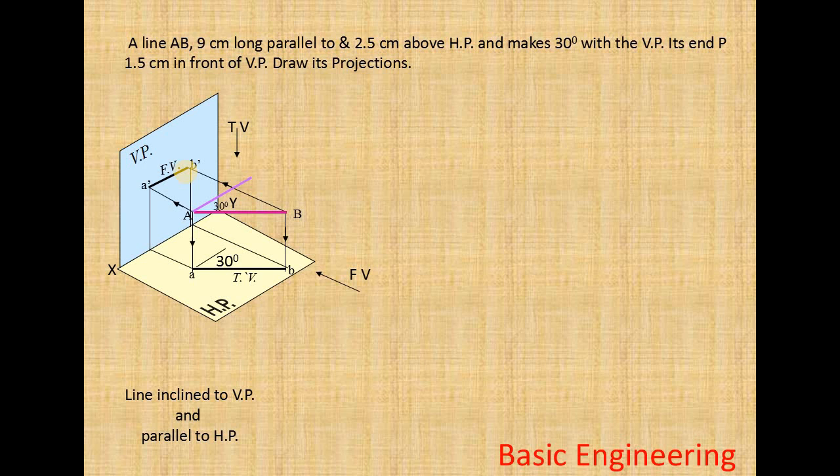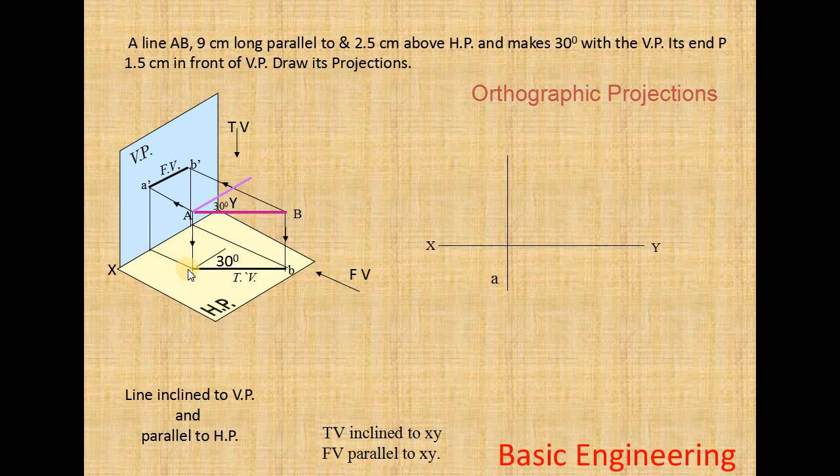Now we have to draw the orthographic projections. First you draw the XY line. Then you draw the projection line. On this line first you have to indicate the A dash and A. So you indicate A. From XY to A is 1.5 cm, that is 15 mm. From XY to A is 15 mm. This is given here as 1.5 cm.